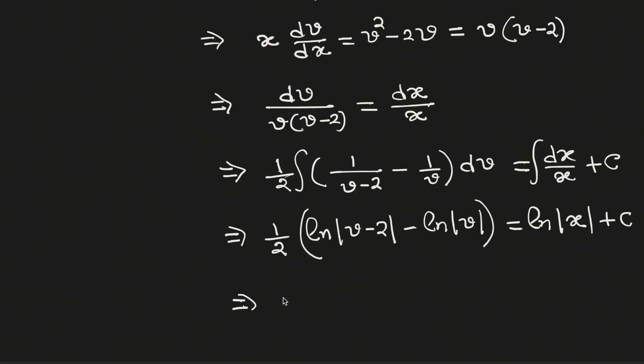The left hand side can be written as 1/2 times ln((v-2)/v) using the properties of logarithms, and this equals ln(x). We rename the constant as ln(c). The constant before logarithm will appear in the exponent.